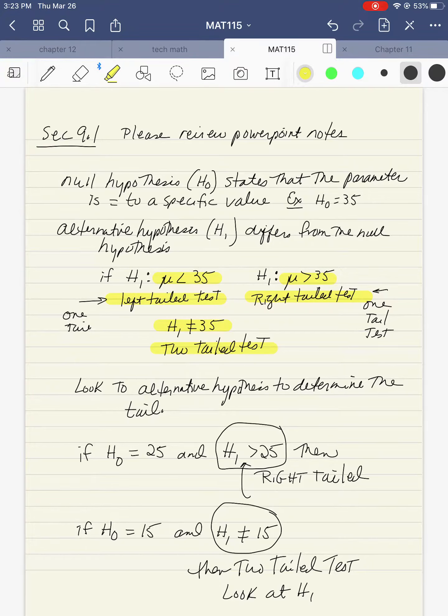Basically, the null hypothesis always says equal, the alternative hypothesis can be less than, greater than, or does not equal. You want to look at the alternative hypothesis to determine the tail.